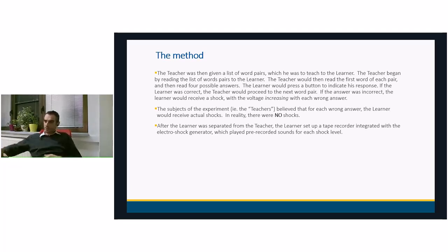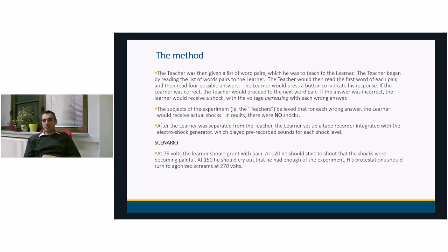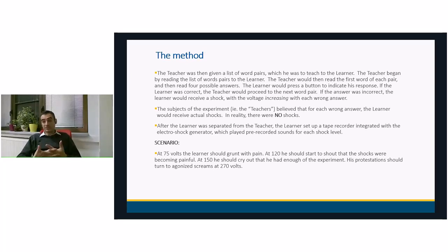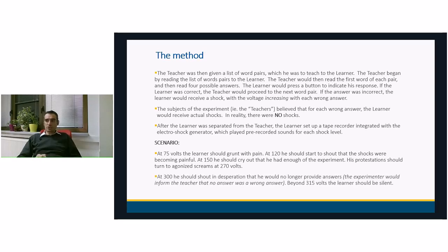The scenario was as follows: at 75 volts, the learner should grunt with pain. At 120 volts, he should start to shout that the shocks are becoming painful. At 150 volts, he should cry out and say he has had enough. His protestations should turn to agonized screams at 270 volts. At 300 volts, he should shout in desperation that he can no longer provide answers. The experimenter would inform the teacher that no answer counts as a wrong answer. Beyond 350 volts, the learner should be silent.